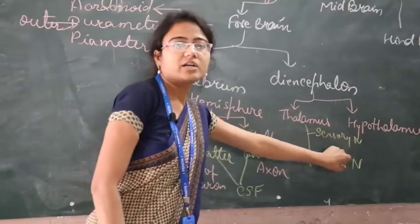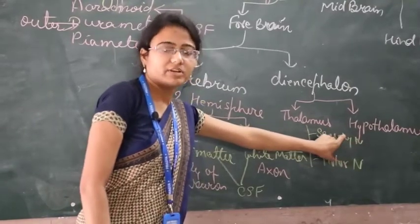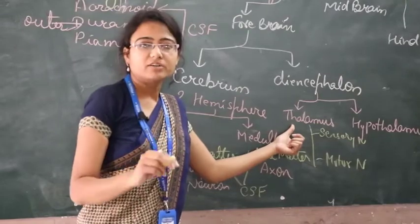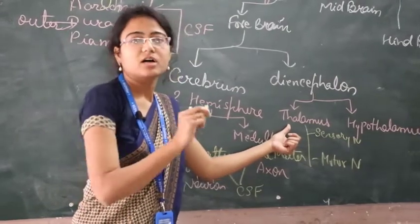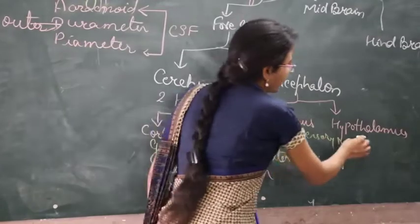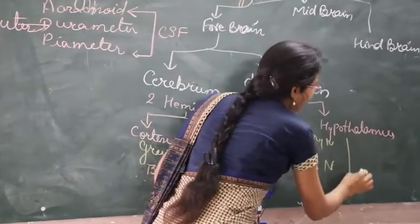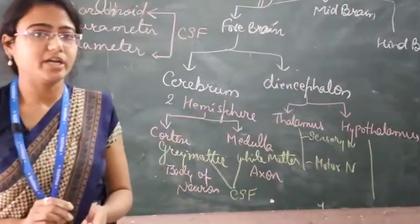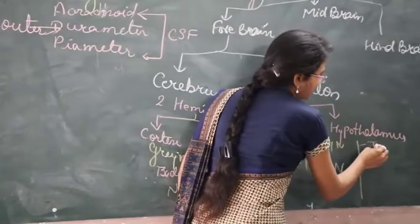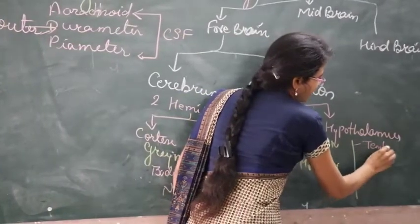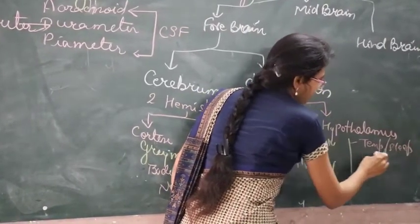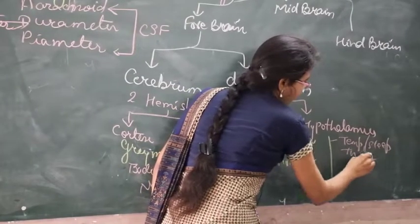These two nerves control our reflex actions. We can say the thalamus is the part which relays all sense organ activities. The hypothalamus is the most important part of our brain because it controls the temperature of the body, sleep-wake cycles, thirst, and hunger.